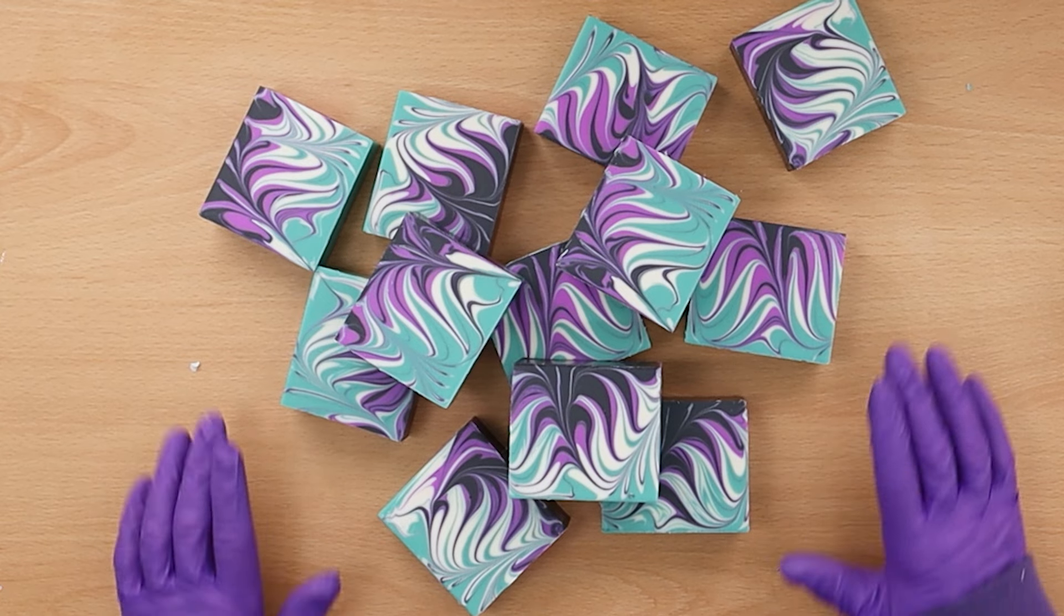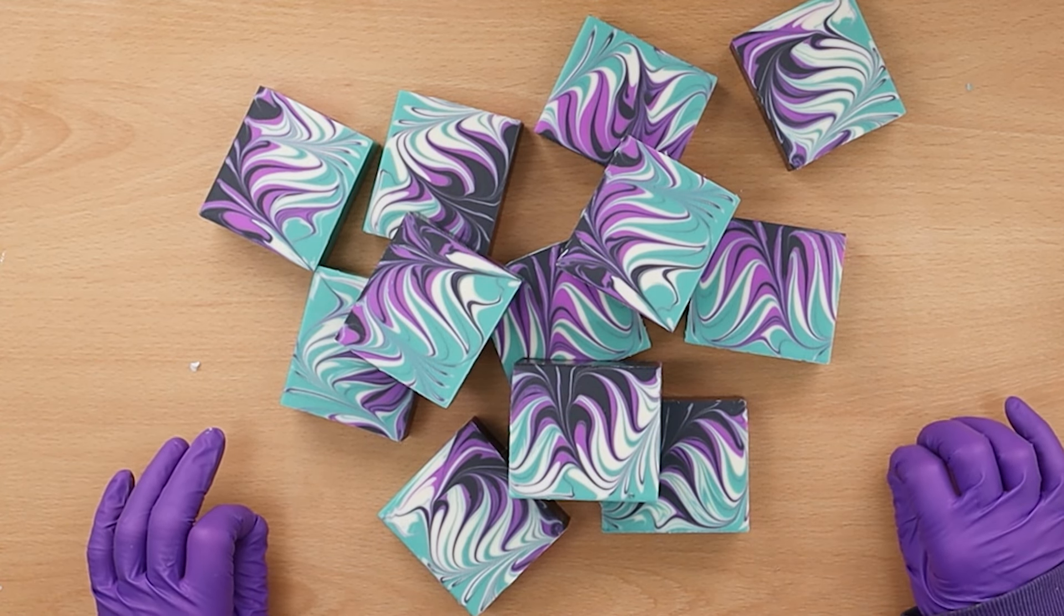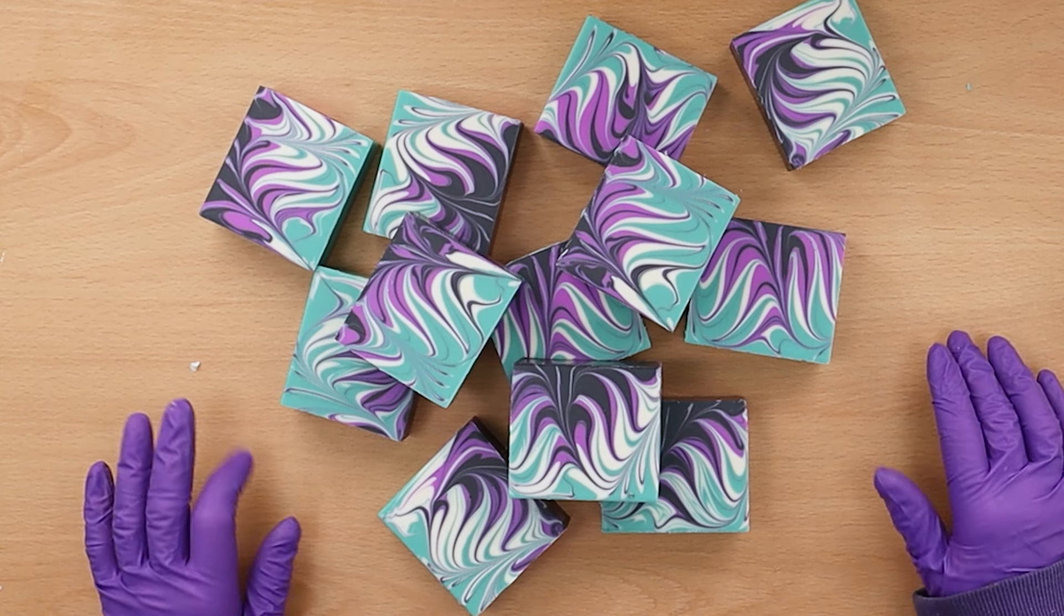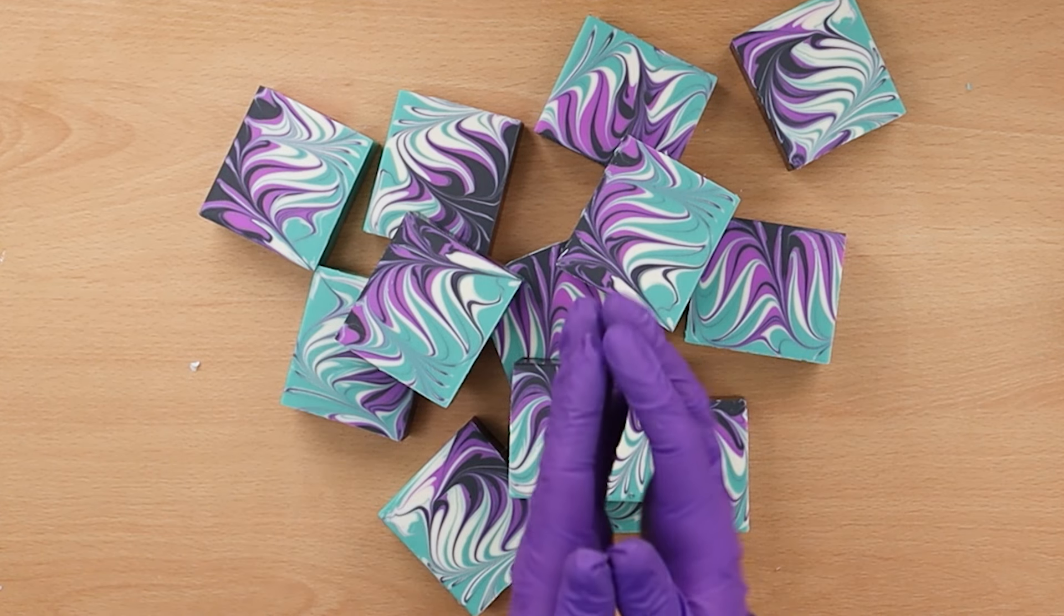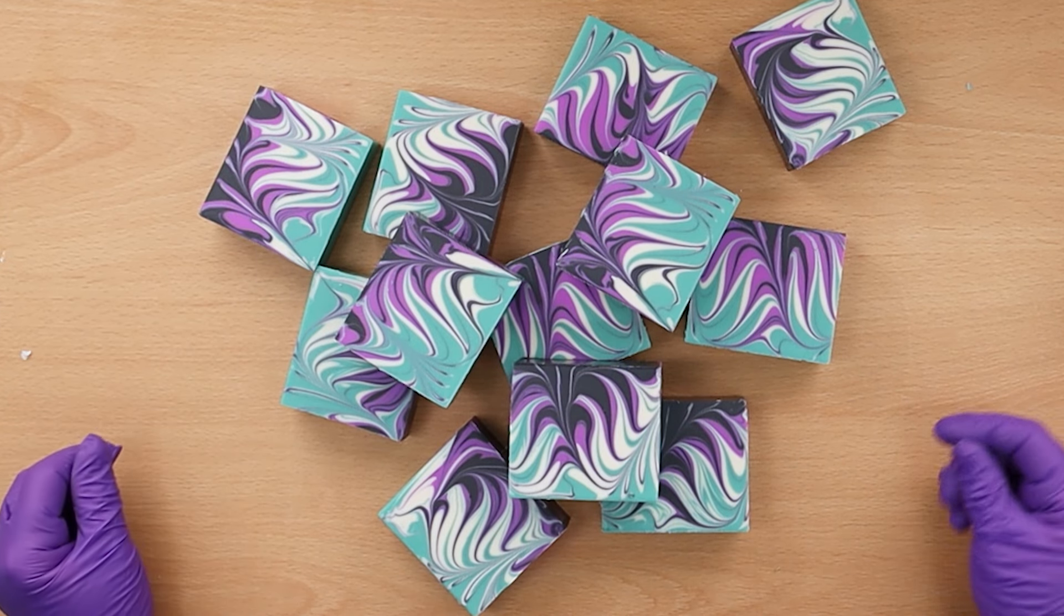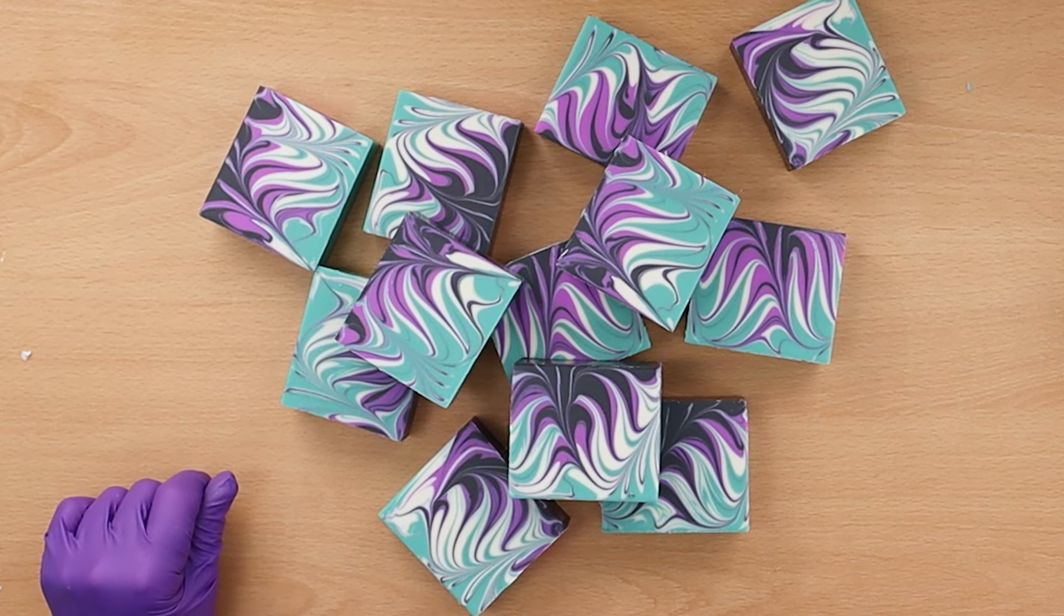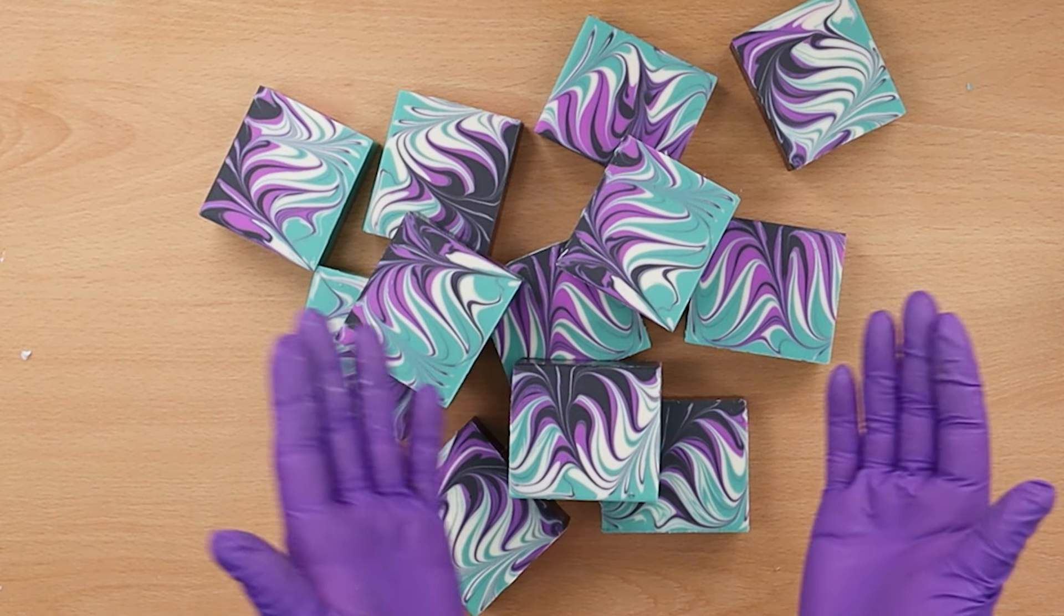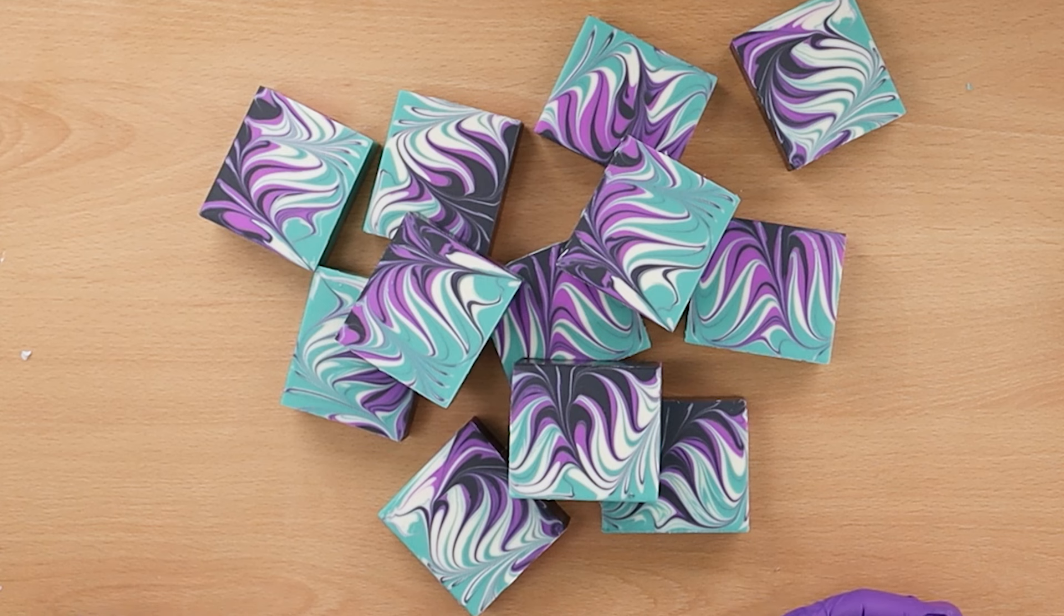So I hope if you're a soap maker that you might have a go at this type of swirl because it was, I'm not going to say it's the easiest swirl in the world to do, but it does mean that you have to be able to control your trace. So it would be a good practice for doing that. And let's face it, if your trace got a little bit thick, you can always just do some sort of hanger swirl as well.